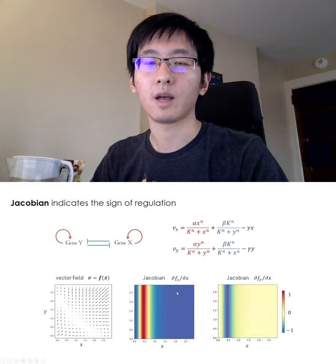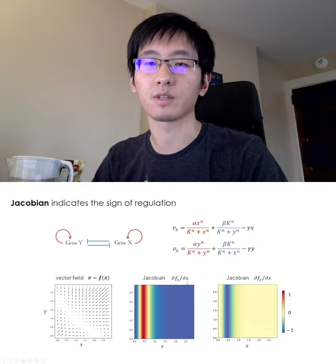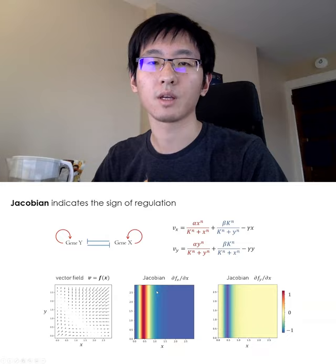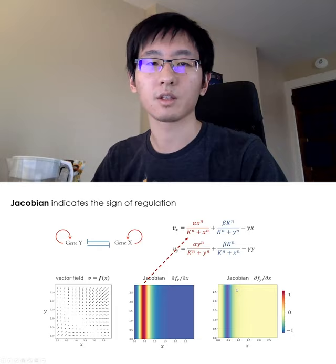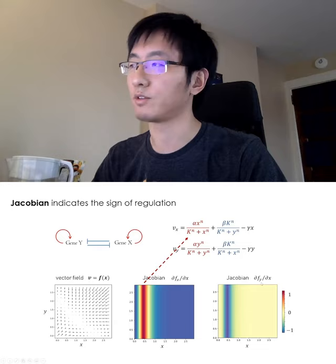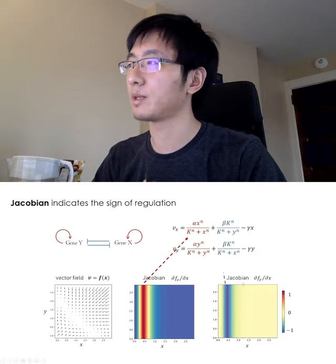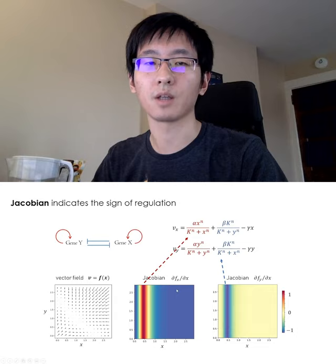Here I show the visualization of two Jacobians. The first one is the derivative of the velocity of gene X with respect to the expression level of itself, and you can see a clear red band indicating a positive Jacobian coming from the activating field function. The second one is the derivative of the velocity of gene Y with respect to the expression level of gene X, and the blue band amounts to a negative Jacobian coming from the inhibiting field function. The blue negative Jacobian region in the first part comes from the degradation terms.